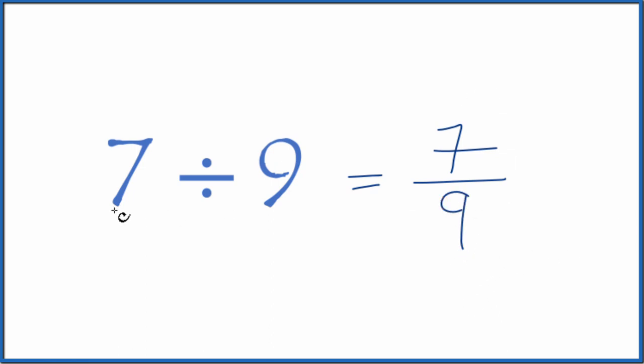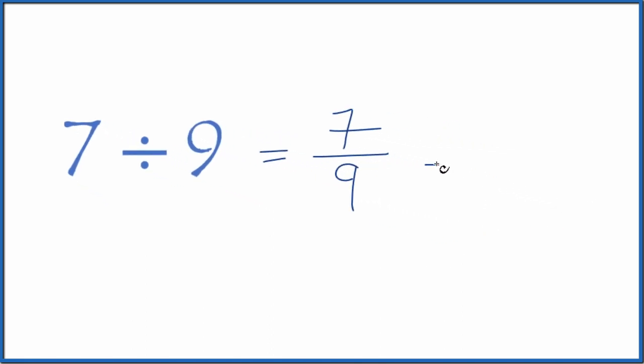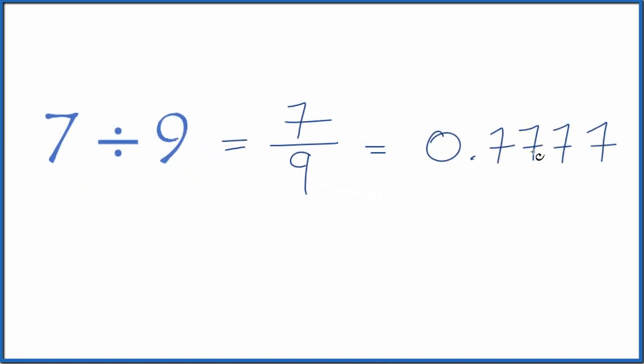You could also, on a calculator, divide 7 by 9. So 7 divided by 9, that equals 0.7777, and the 7's keep repeating.